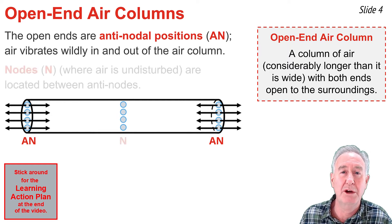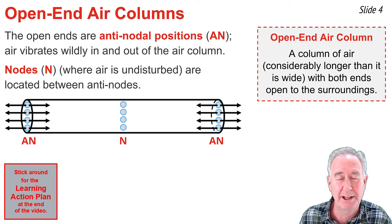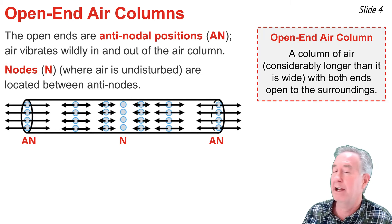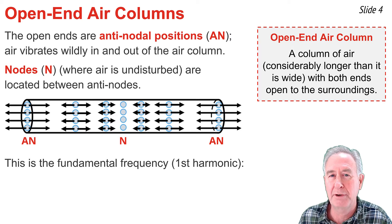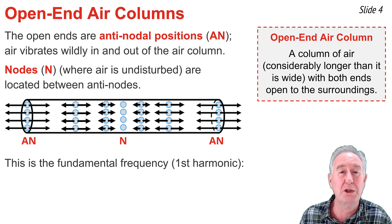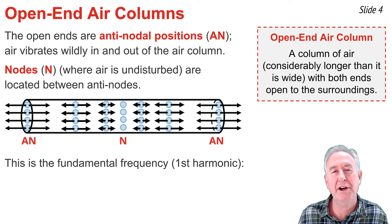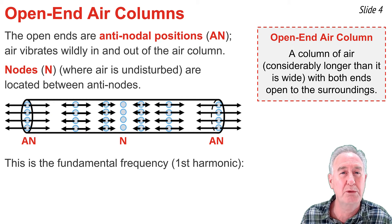In between every antinode is a nodal position where air remains undisturbed. This particular diagram represents the vibrational pattern for the first harmonic or fundamental frequency. Other harmonics or frequencies would exist, and in each case there would be additional nodes and antinodes located between the ends of the air column.